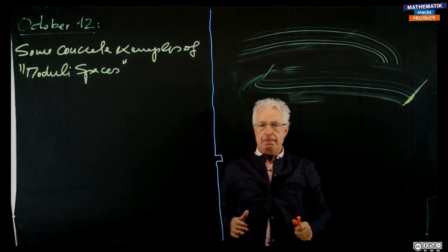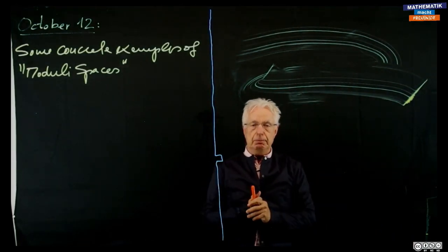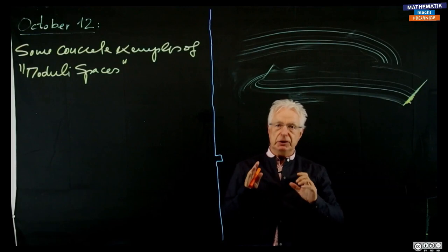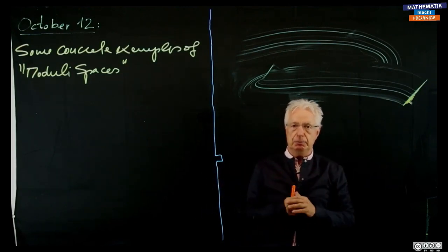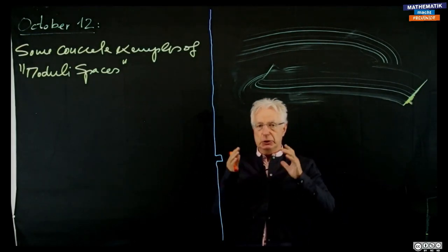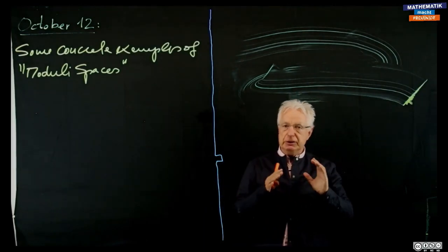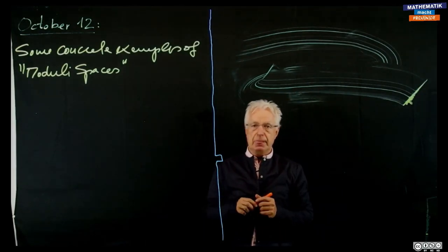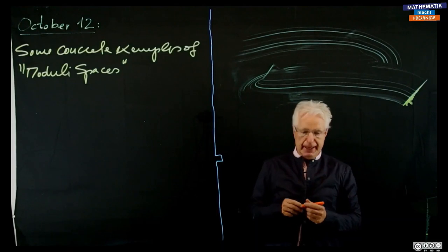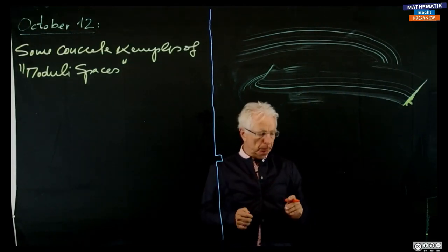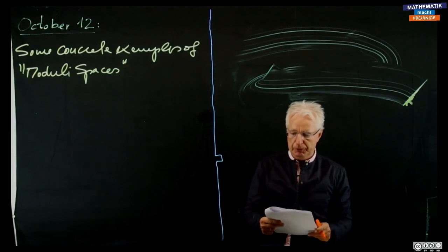What we'll do today are five examples of concrete situations where we try to find a moduli space, a classifying space, a universal space in very different fashions. The examples are quite opposite to each other and you will see a little bit where the problems are. There are several and distinct problems.